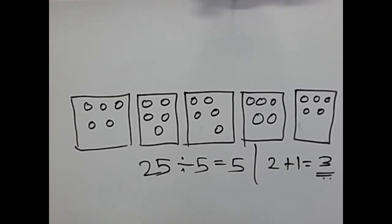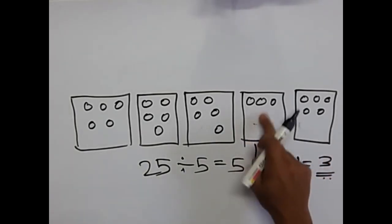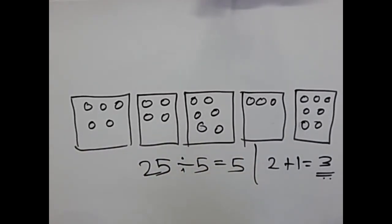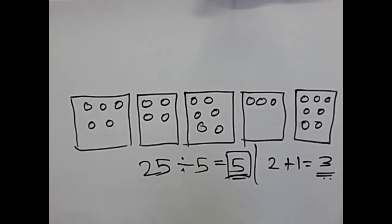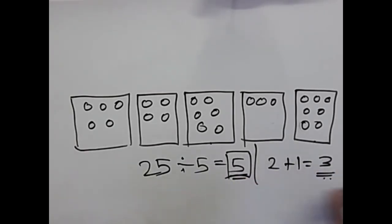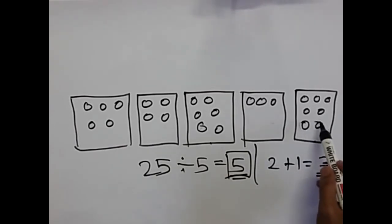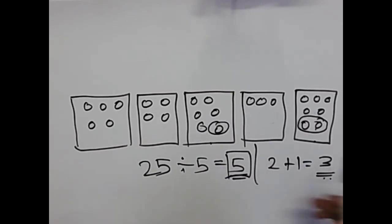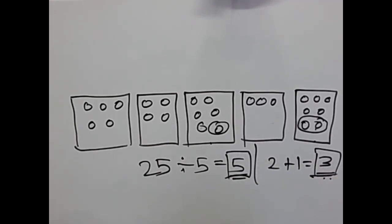From the logic we cracked earlier, let's verify we get the same answer. In this example, the average is 5. Boxes containing more than 5 candies are box 5 and box 3. From box 5, we need to take out 2 candies to bring it to 5. From box 3, we need to take out 1 candy. So 3 candies in total need to be removed to equalize, and the answer is 3. Our logic is correct.